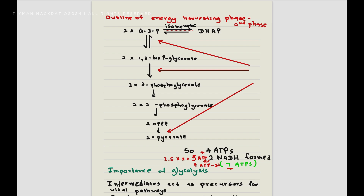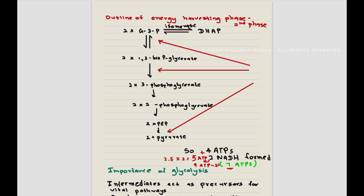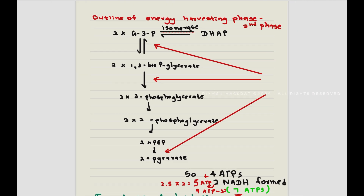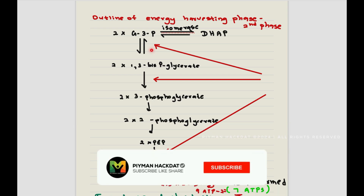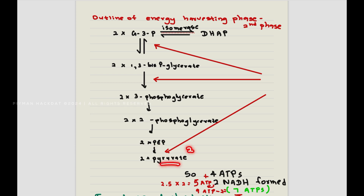So those are the 10 reactions of glycolysis, starting from glucose and ending with pyruvate. Now let's talk about the energy generation of glycolysis. In two reactions, two ATP molecules were used. In terms of production: when glyceraldehyde-3-phosphate is converted, two molecules of NADH are produced. When 1,3-bisphosphoglycerate turns into 3-phosphoglycerate, two molecules of ATP are produced. And when phosphoenolpyruvate turns into pyruvate, two more molecules of ATP are produced.